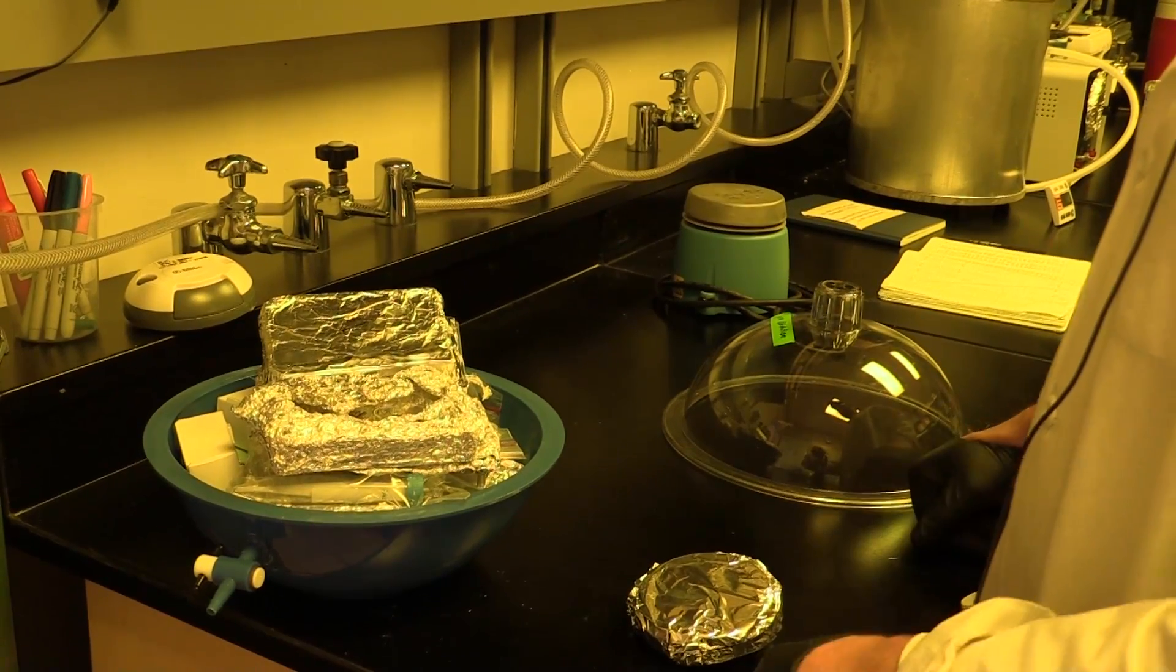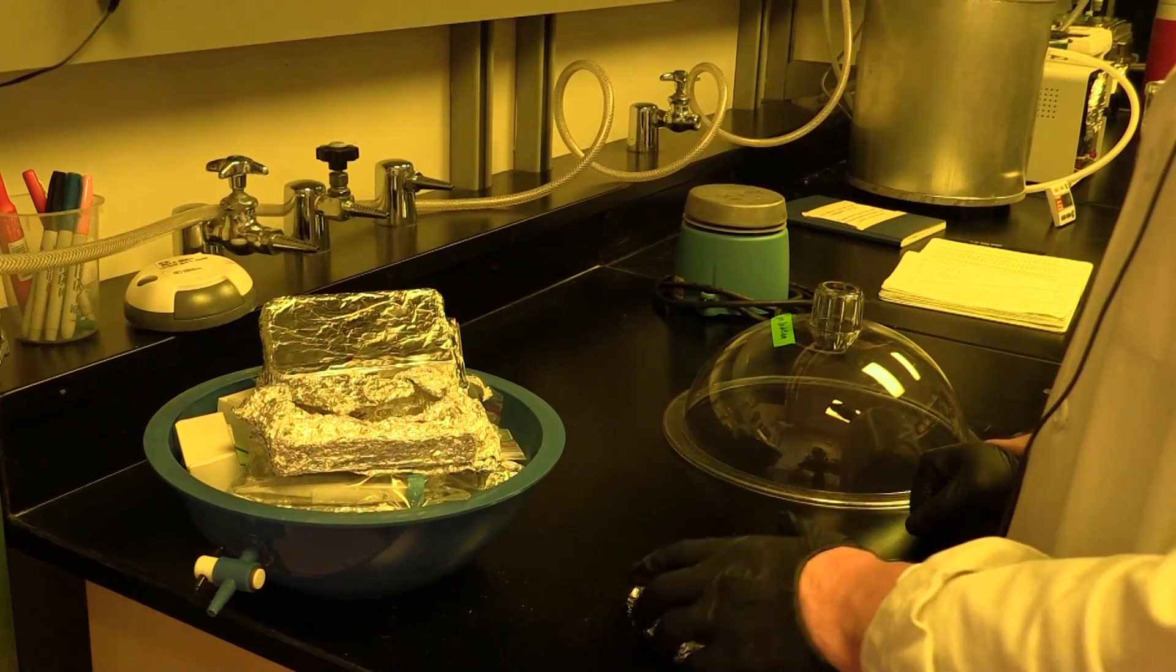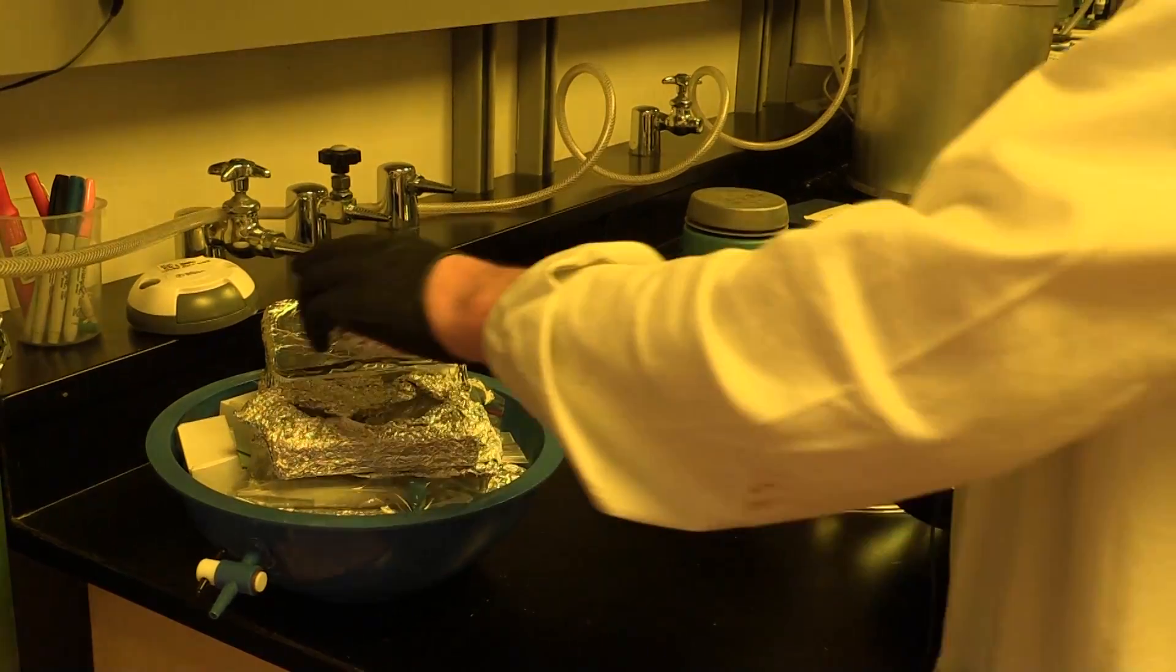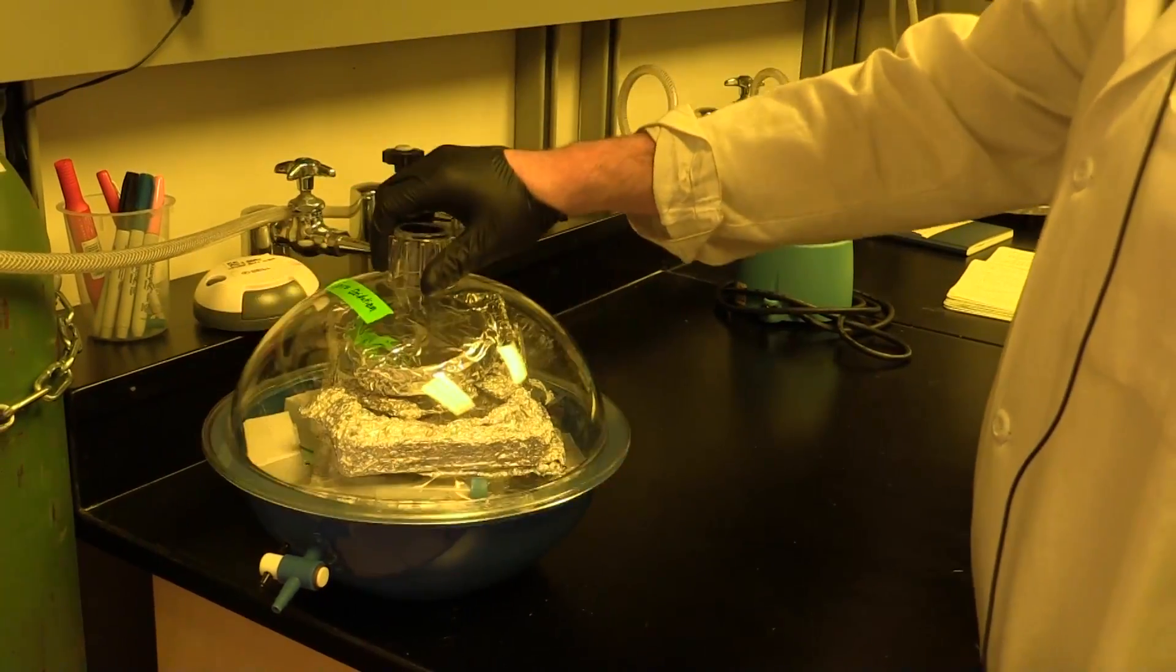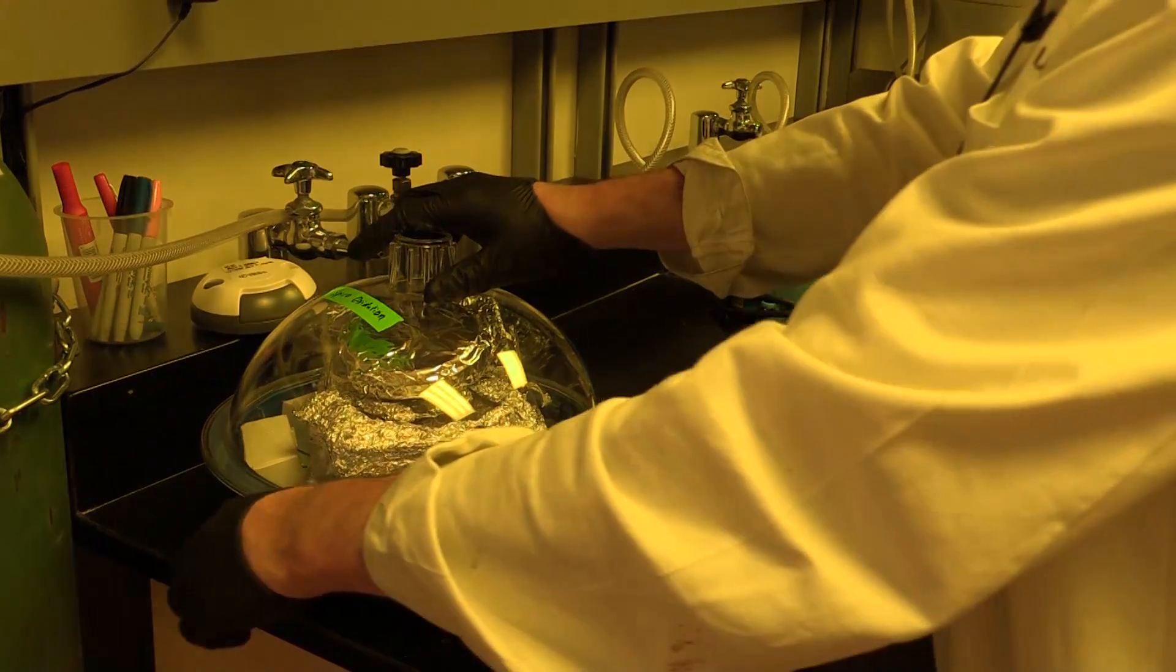After we spin coat the Spiro, we then leave it in a desiccator overnight in air. This allows the Spiro-OMeTAD to oxidize, which will further p-dope the Spiro, making it more conductive for holes.